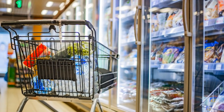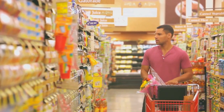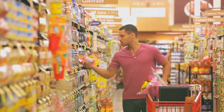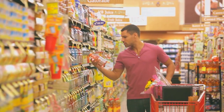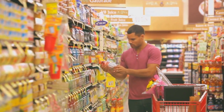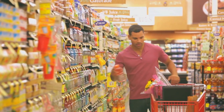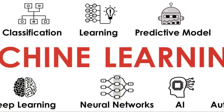For instance, imagine a grocery store database. The algorithm might discover that people who buy bread often also buy milk. This relationship can be expressed as a rule: if bread, then milk. In this case, bread is the antecedent, and milk is the consequent.